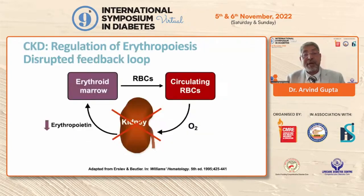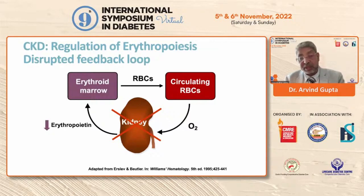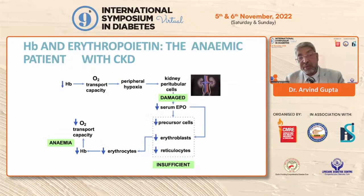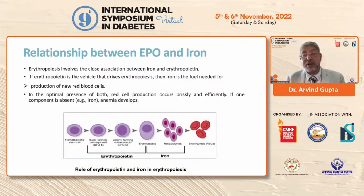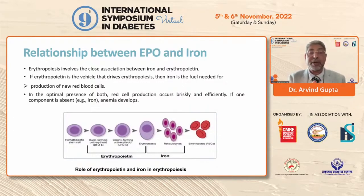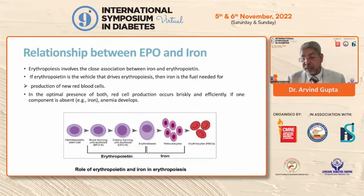In patients with CKD, the kidney does not produce sufficient erythropoietin. When hemoglobin is reduced, damage and reduced erythropoietin ultimately prove insufficient, reducing erythrocytes so anemia persists. When treating patients with erythropoietin, it is essential to also replace iron. If erythropoietin is the vehicle that drives erythropoiesis, iron is the fuel needed for production of new red blood cells — this is the key take-home message.